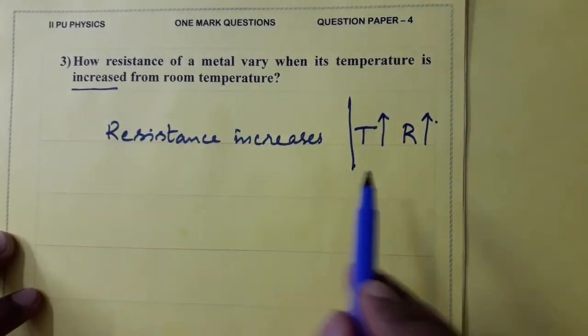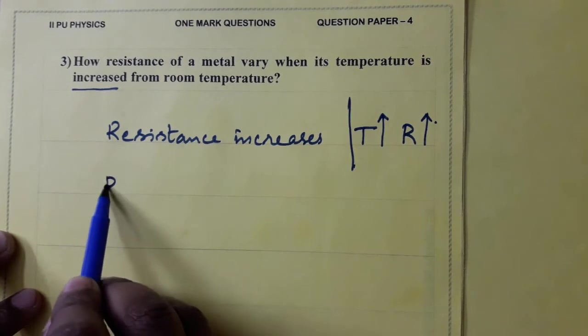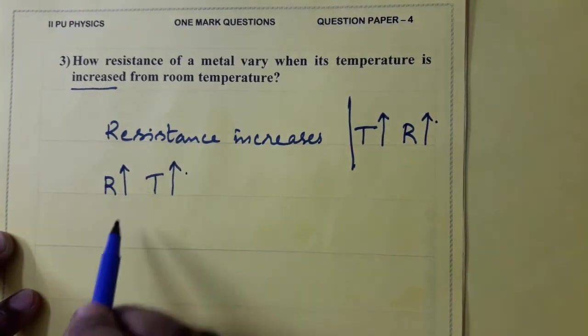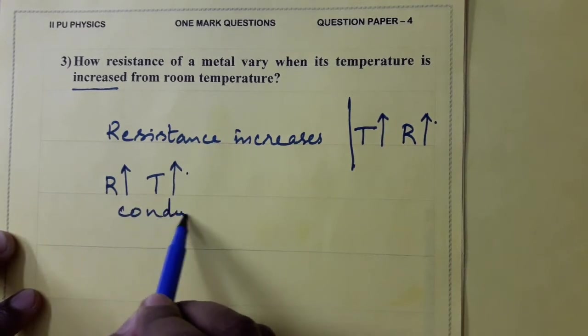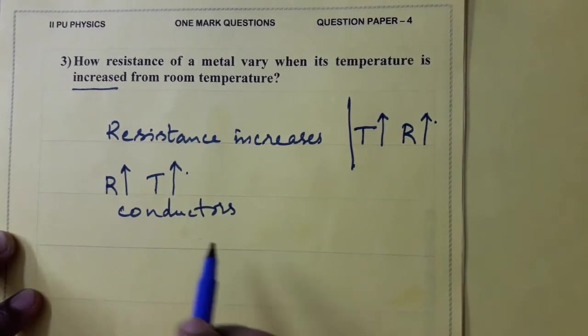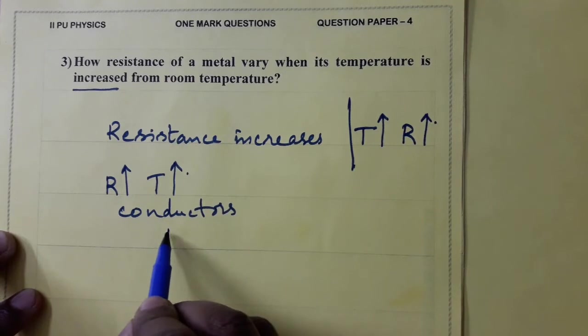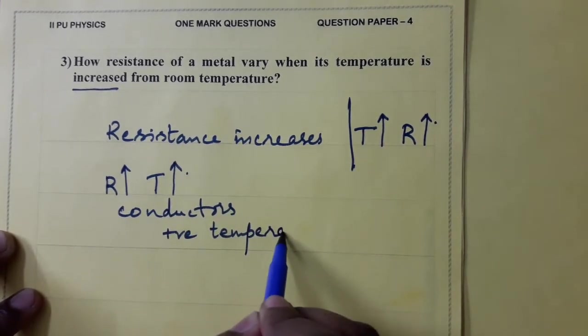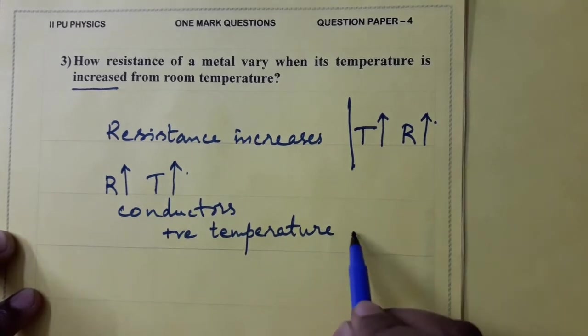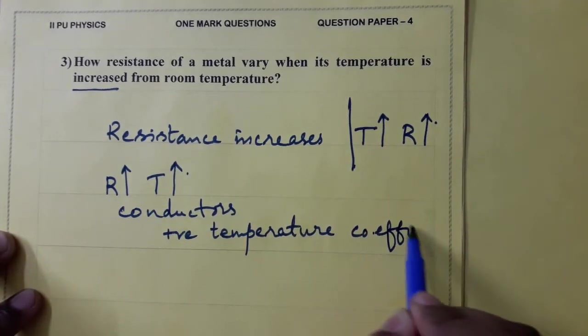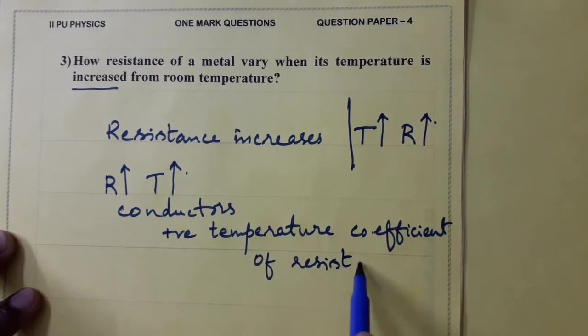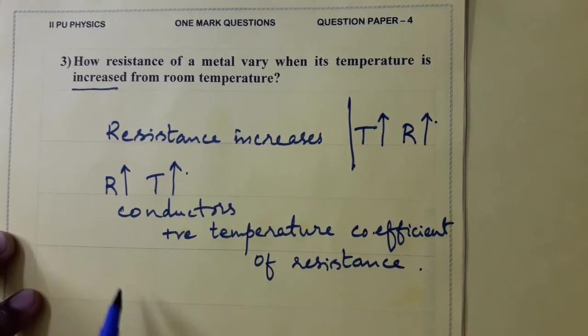Now, few more points. Since resistance increases with the increase in temperature, conductors are said to have positive temperature coefficient of resistance.